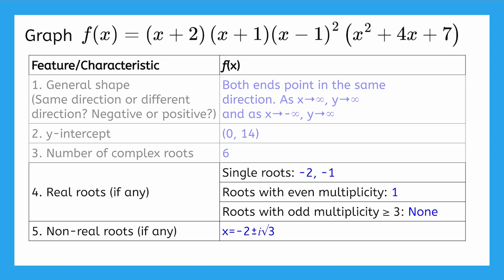Before we graph, it's a good idea to double-check that we found all of the roots. In step 3, we determined that this function has 6 complex roots, and there are 2 single roots, 1 double root, and 2 non-real roots, which is our total of 6. That's perfect! And now, we're ready to graph!